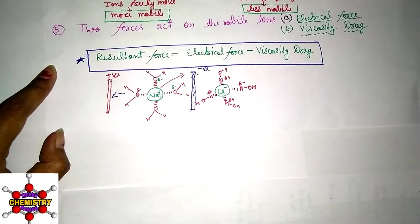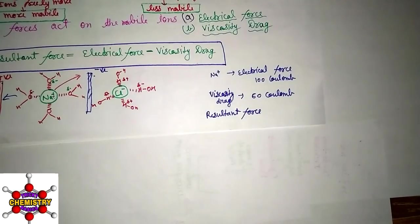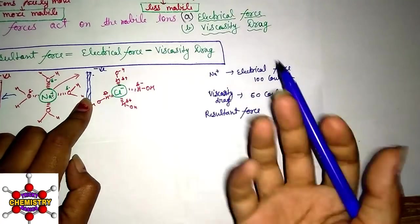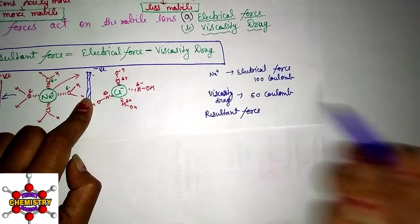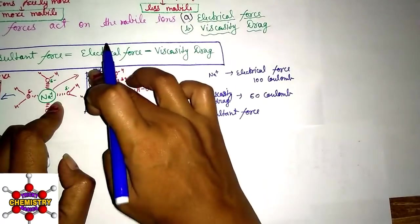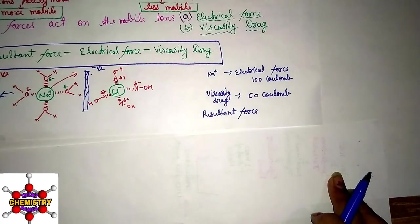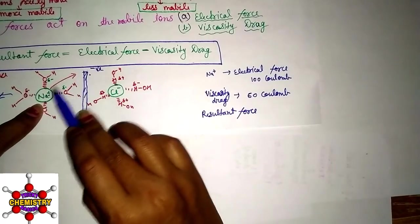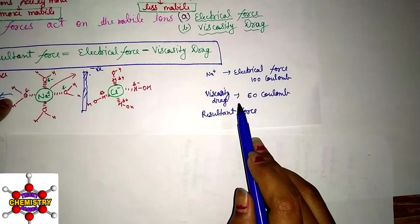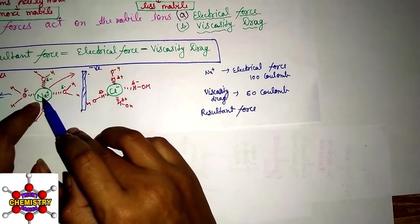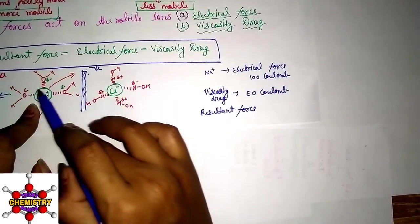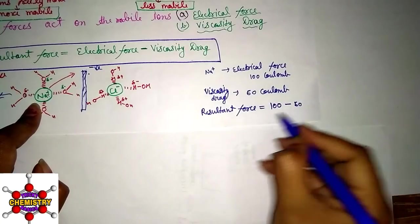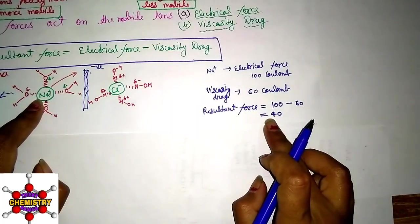The resultant force on a cation can be understood as follows: the electrical force from the negative plate on a cation is, say, 100 coulombs, while the viscosity drag (water particles acting against it) is 60 coulombs. The net resultant force is therefore 100 − 60 = 40 coulombs.